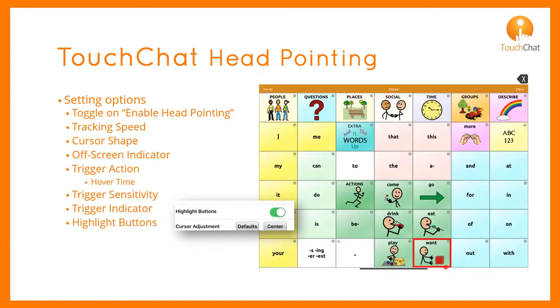Highlight button is an on-off feature. It highlights the buttons as you move across the screen, indicating where you are.